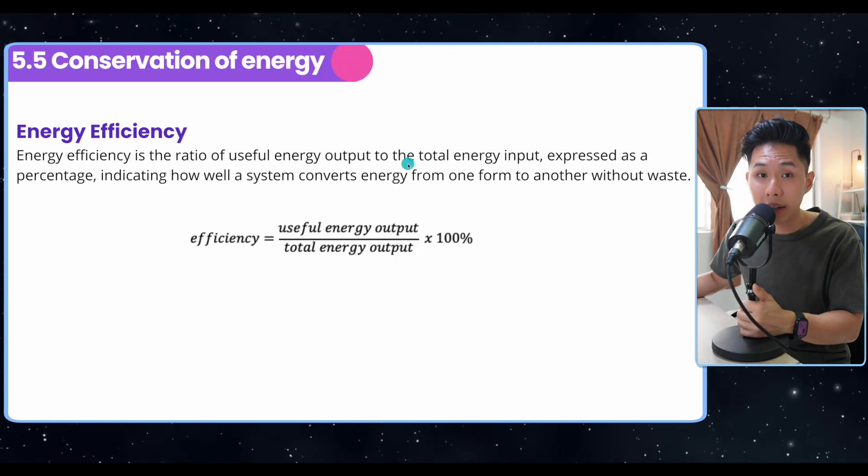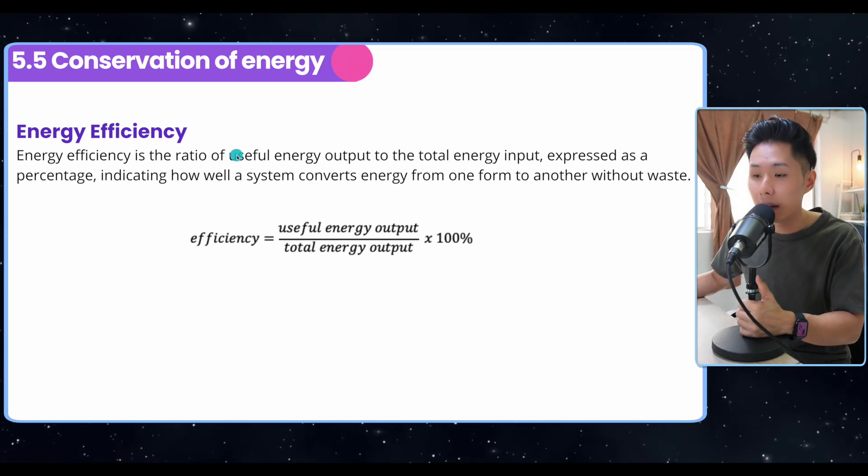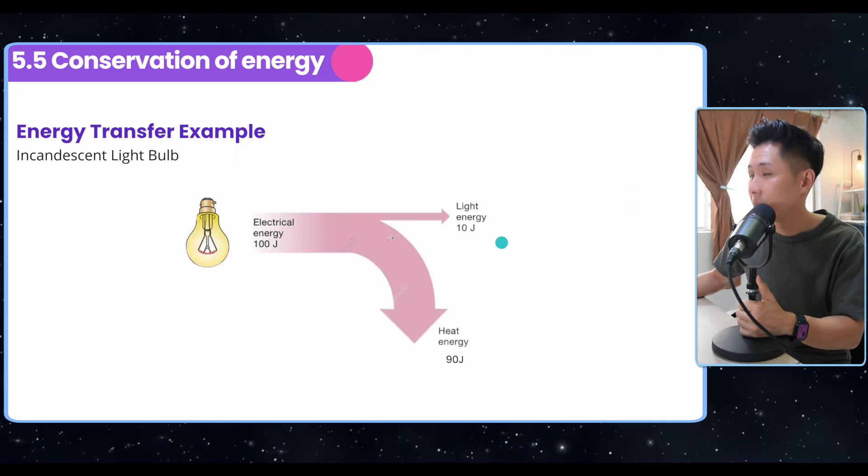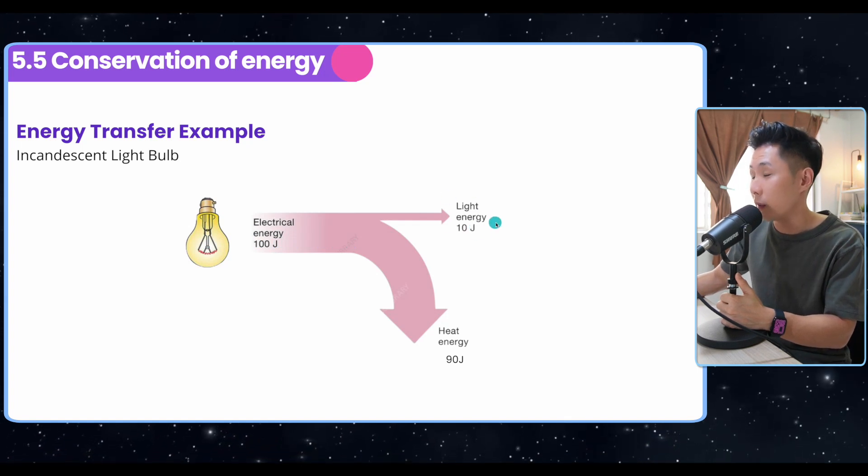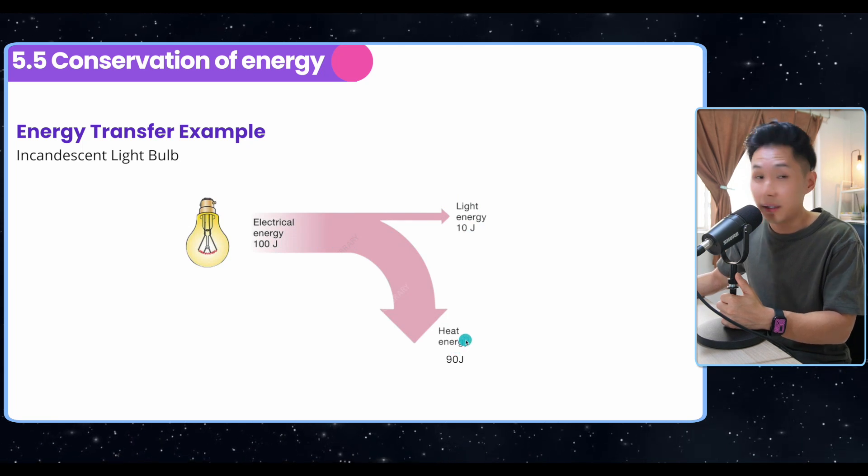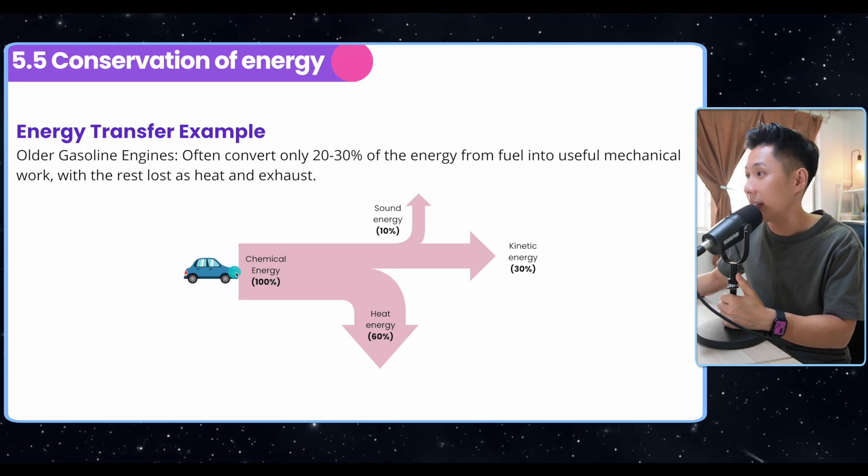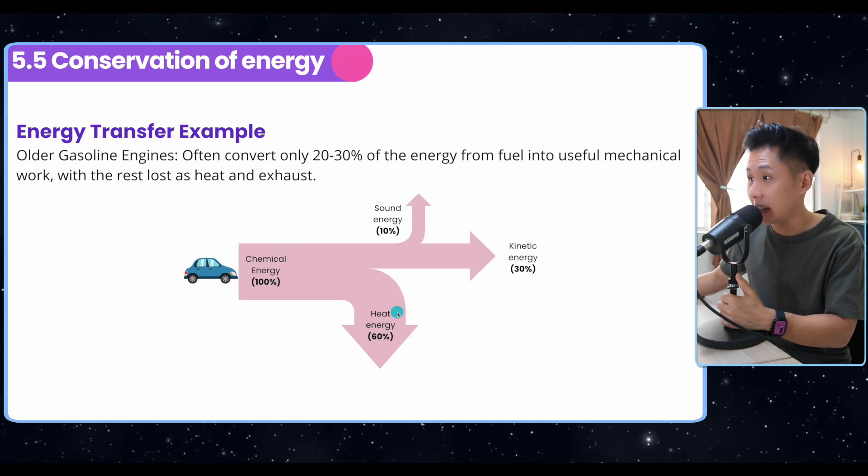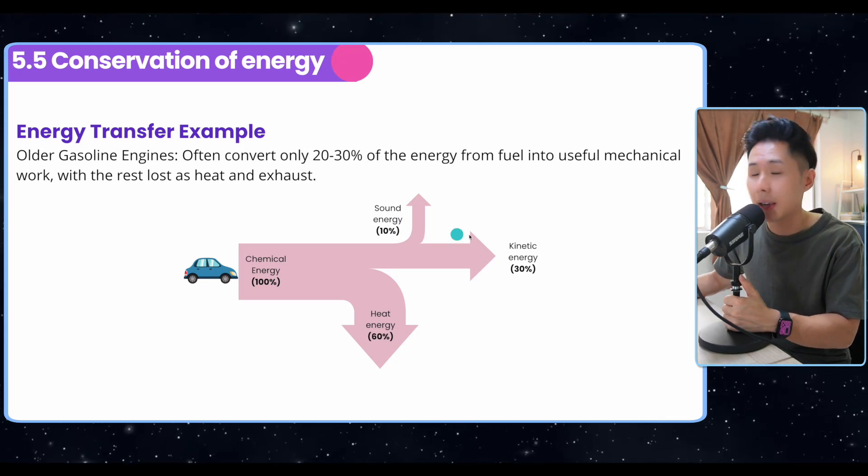Now let's look into another concept of energy: energy efficiency. It basically says how effectively energy is being used. We can use this formula here. So for example, for a light bulb, only 10% of the energy is converted into useful form, which is light energy. And 90 joules of energy is not used at all. We don't need the heat here. Whereas for a car, it can be 10% for sound energy, 30% for kinetic, 60% for heat. So I'm just giving you an example here. Not every car is like that. Every car is different.